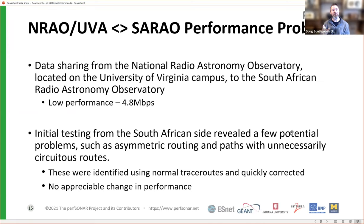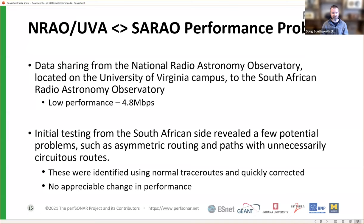There are a lot of acronyms here, but it's the National Radio Astronomy Observatory, which is part of University of Virginia's campus, and the South African Radio Astronomy Observatory — so we're talking about a fair amount of distance to get over to South Africa. They're trying to transfer some decent-sized files but getting really abysmal performance — less than five megabit on average. Using perfSONAR, we ran a few trace routes to see what path the data was taking, because we had a perfSONAR node right next to SARAO and nodes at NRAO and UVA.